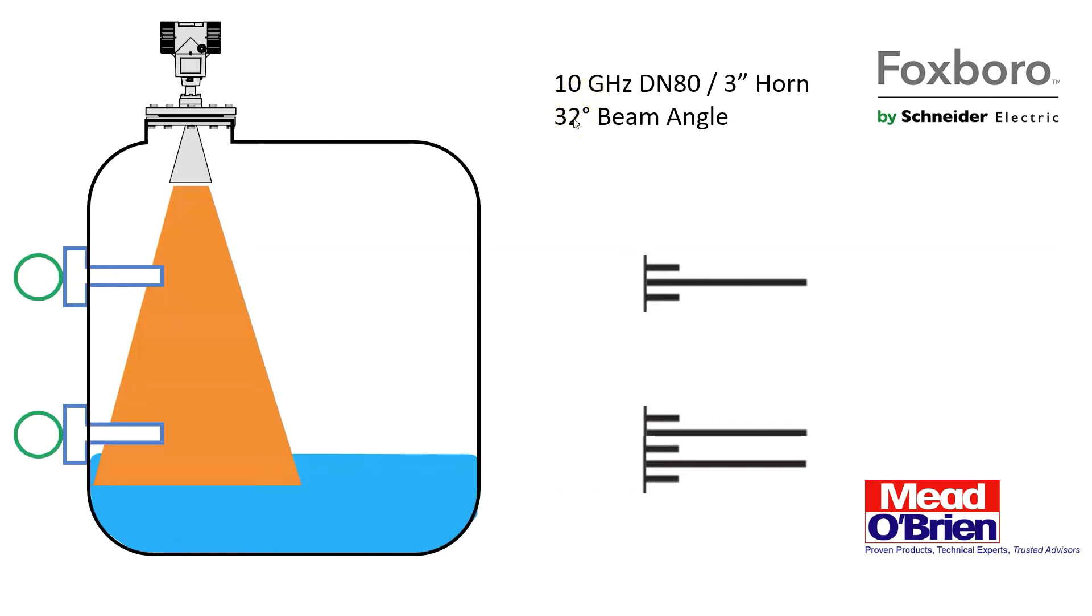What's interesting about radar is the lower the frequency, the wider the beam. So I'll show you the extremes here. A typical 10 gigahertz radar with a three inch horn would have a 32 degree beam angle. Why that's important is you get a nice wide coverage, but it can also pick up what we would consider false echoes.